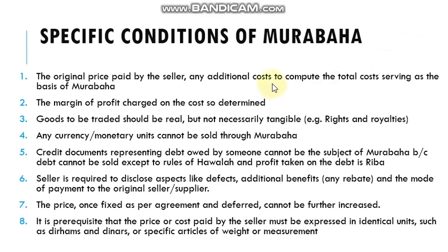As I told you in my previous video, there are certain specific conditions which are more concerned with the contract or sale of Murabaha, along with the other conditions specified in the second part of this video. We can enlist these conditions — most probably a total of eight. The first one is the original price paid by the seller plus any additional cost to compute the total cost, which serves as the basis of the Murabaha.